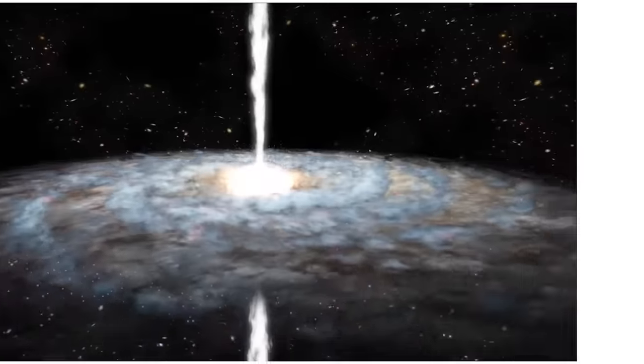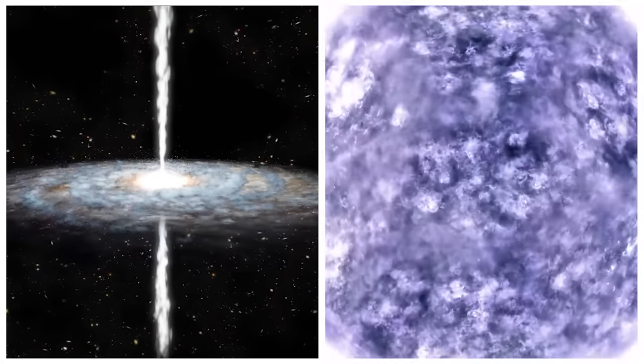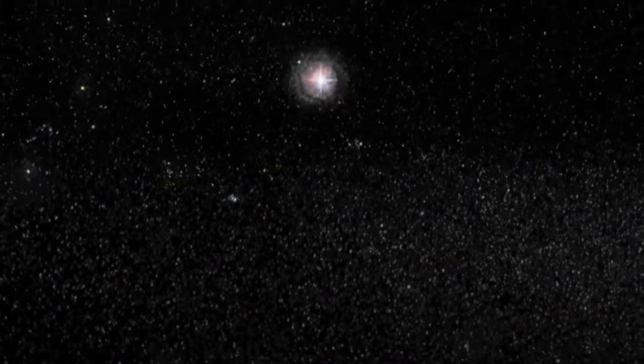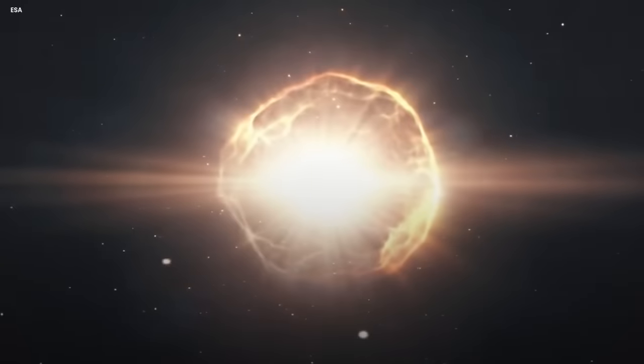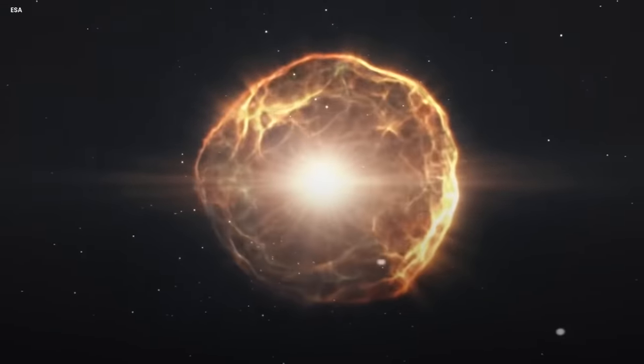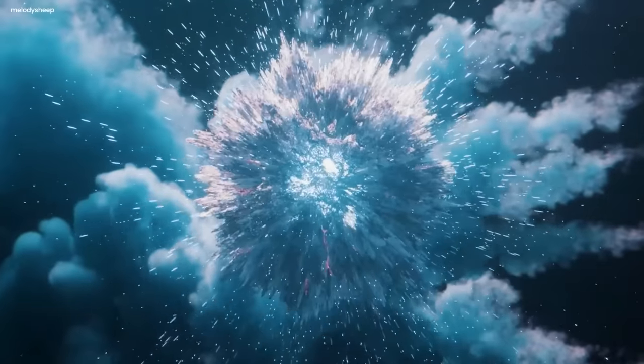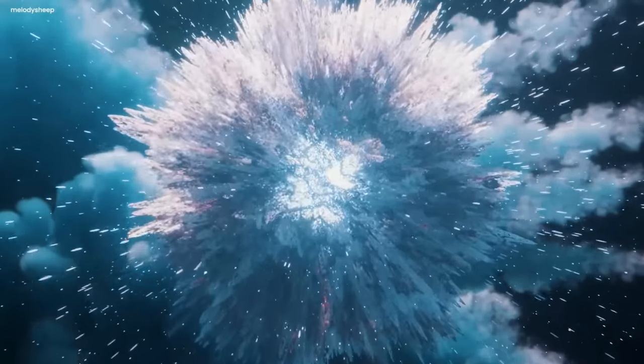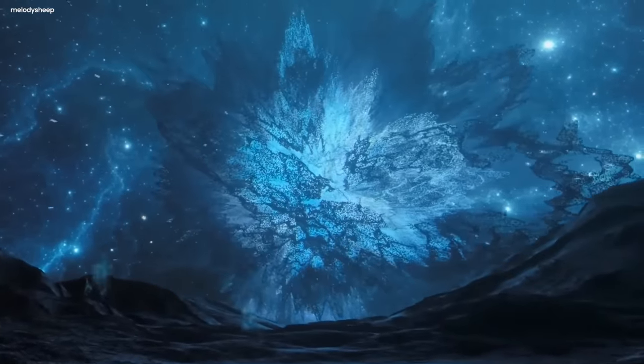Black holes originate from the remnants of massive stars that have consumed all their nuclear fuel. These stars undergo a dramatic event known as a supernova, which marks the conclusion of their life cycles. During a supernova, the outer layers of the star are explosively ejected into space, while the core experiences a gravitational collapse. However, not all collapses are identical.